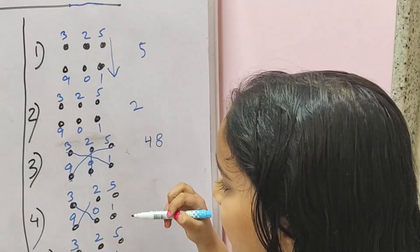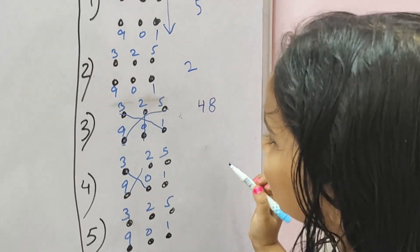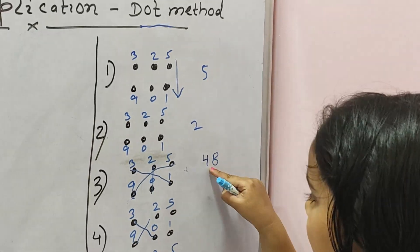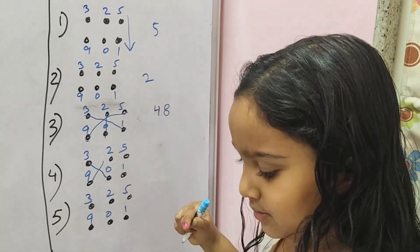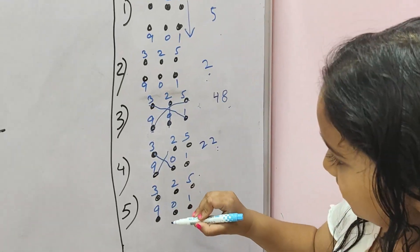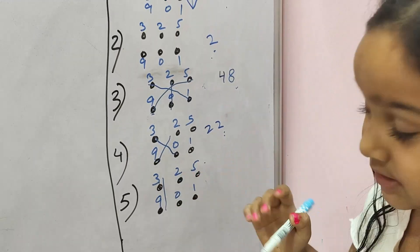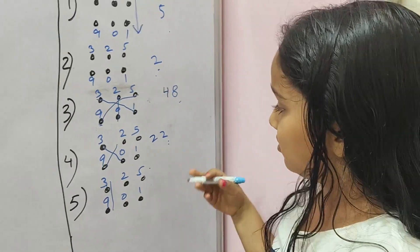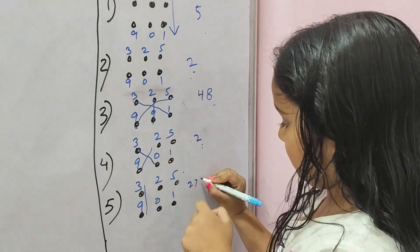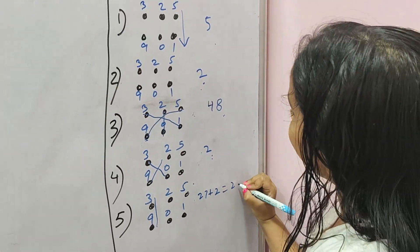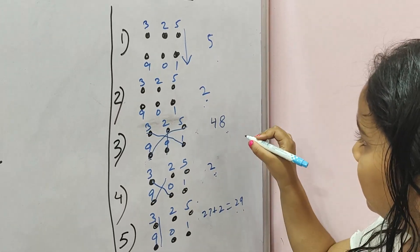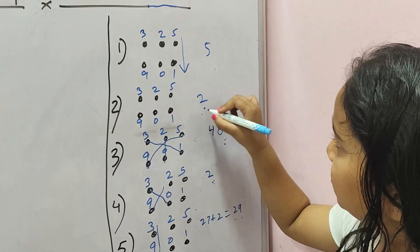The fourth step: 0 times 3 is 0, plus 9 times 2 is 18, plus the carry forward 4, equals 22. Carry forward 2. The fifth step: 9 times 3 is 27, plus the carry forward 2, equals 29. So the answer is 292825.